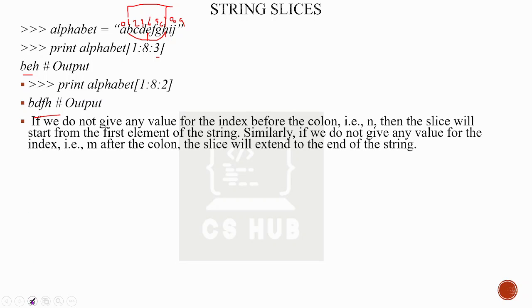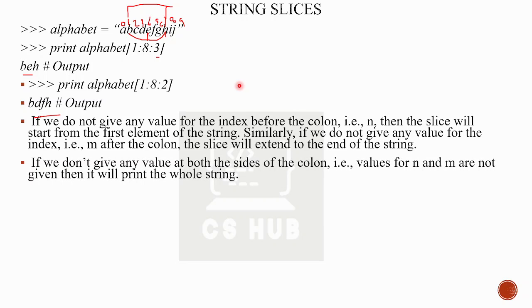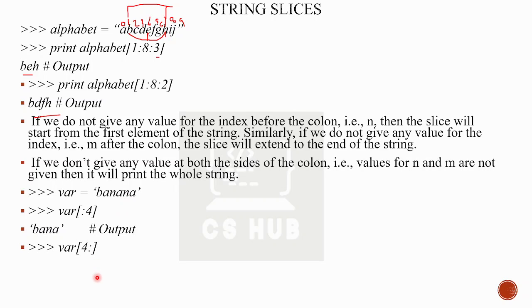If we do not give any value for the index before the colon, the slice will start from the first element. If we do not give the end value, it goes to the last element. If neither n nor m are given, it will print the whole string. For example, var is equal to 'banana', and var[4:] starts from index 4 to the end.